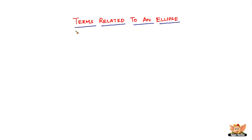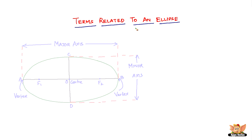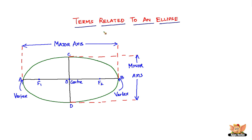In this video, let us look into some of the terms related to an ellipse. Here we are with the diagram of an ellipse completely labeled — the parts of an ellipse. These are some fundamental and basic terms related to an ellipse, which are also very important to solve problems based on an ellipse.